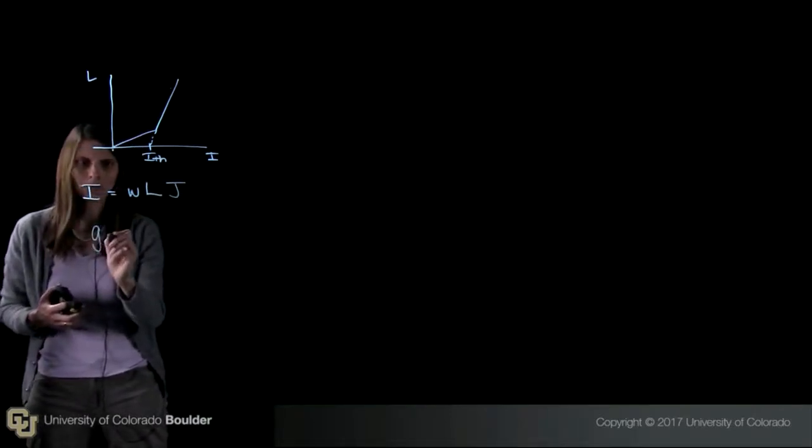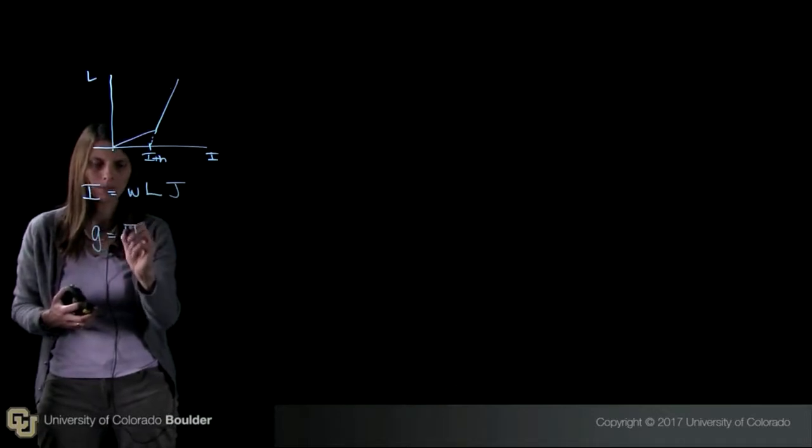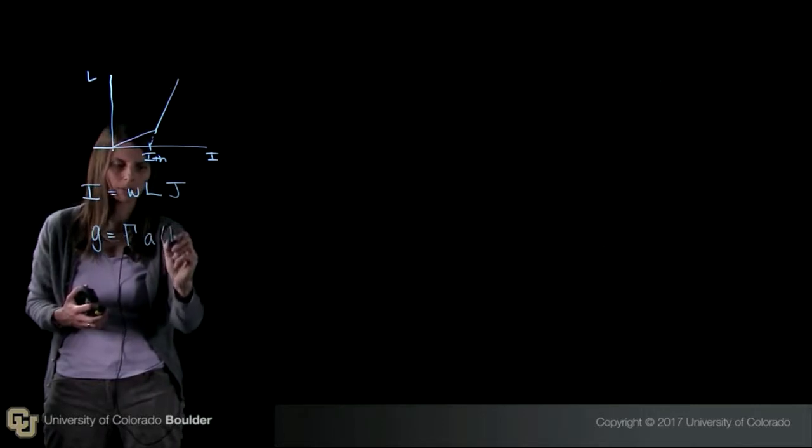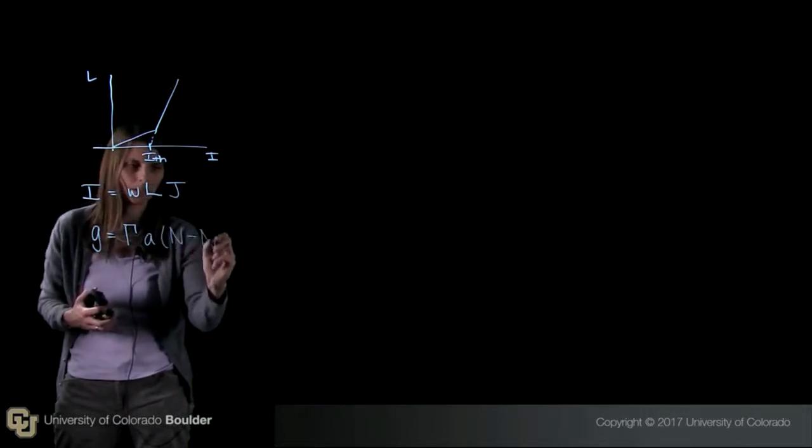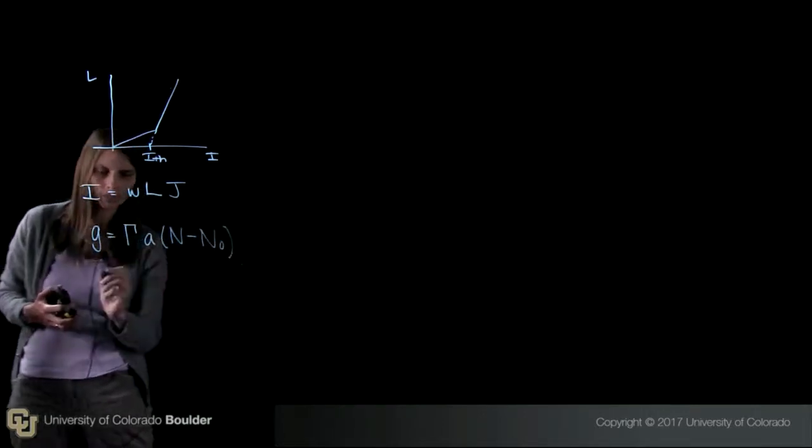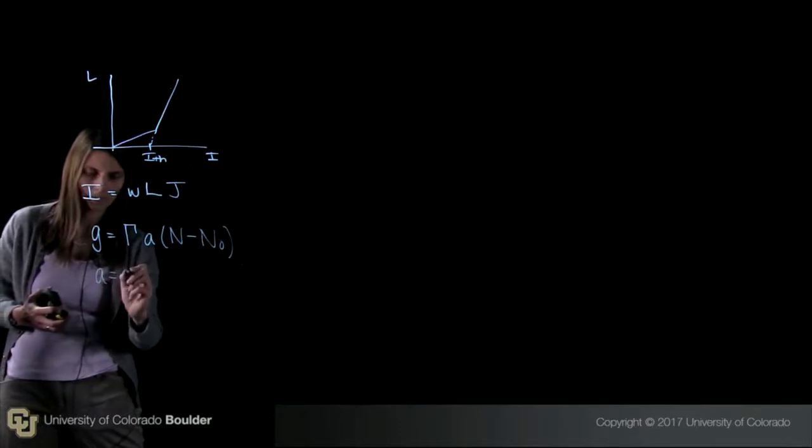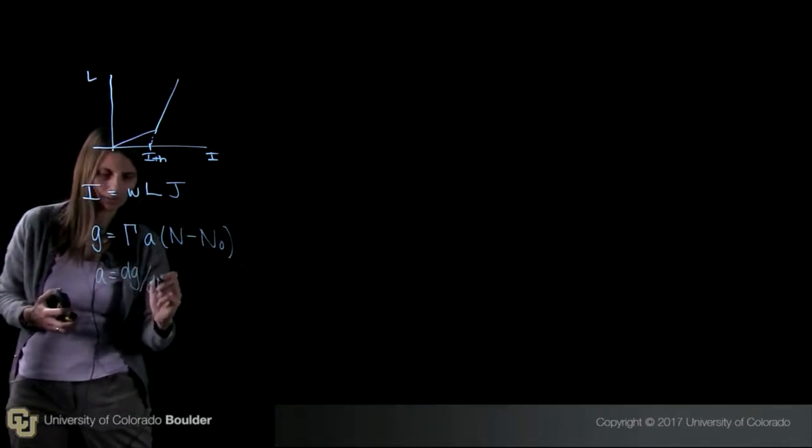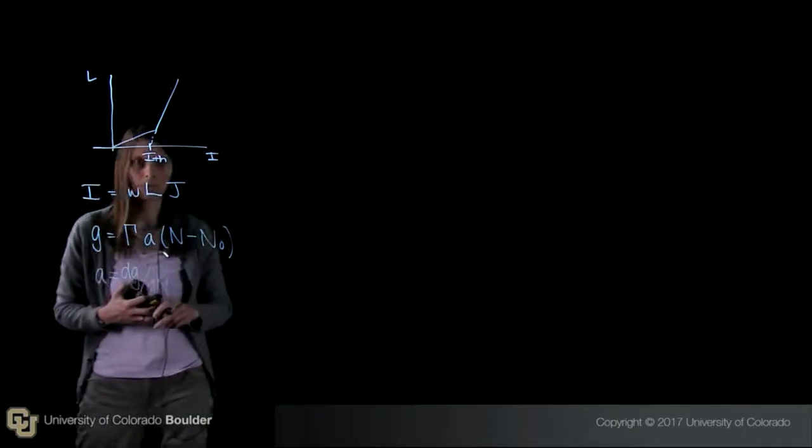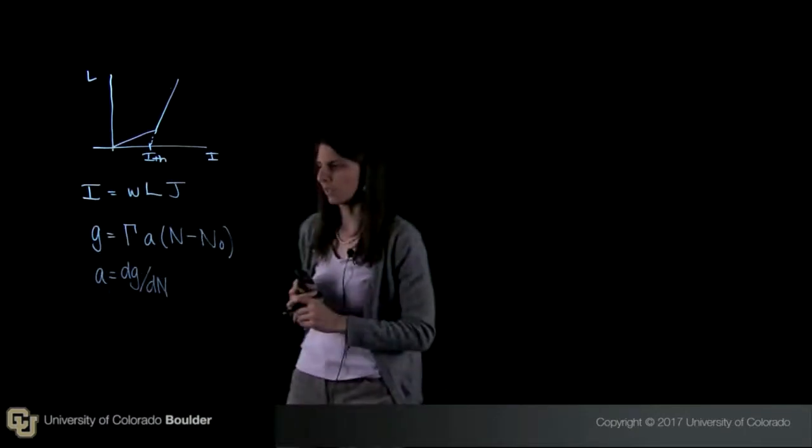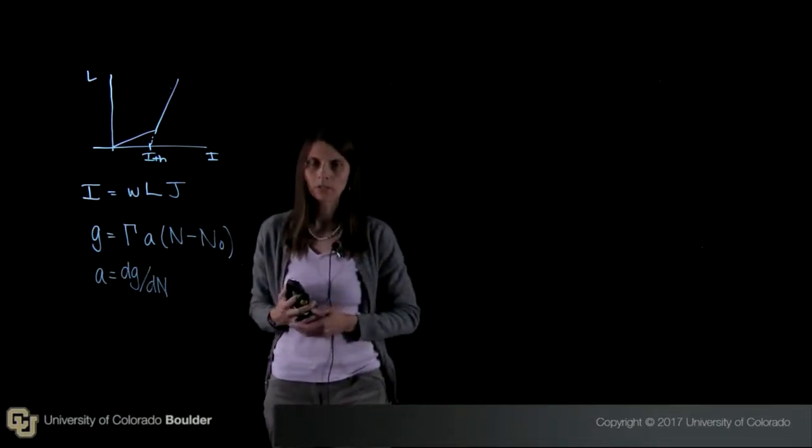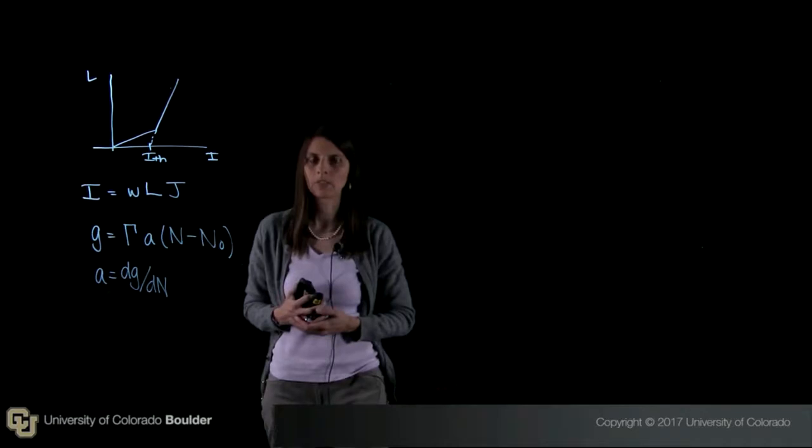We can also assume that the gain is approximately equal to the confinement factor times the gain coefficient times n minus n0. The gain coefficient, a, is equal to dg/dn, the derivative of the gain with respect to the number of carriers. n is the carrier density, and n0 is the carrier density required to get the gain medium to transparency.